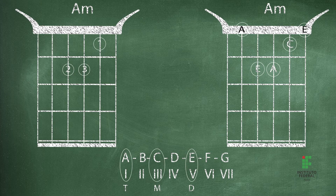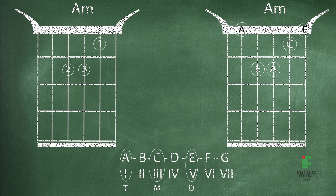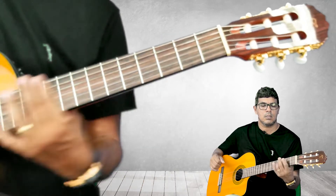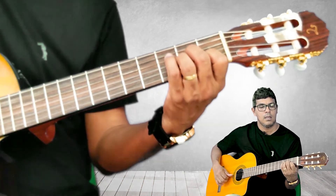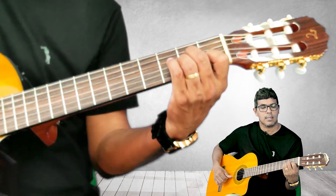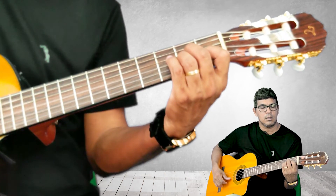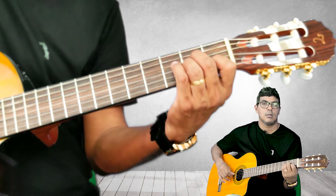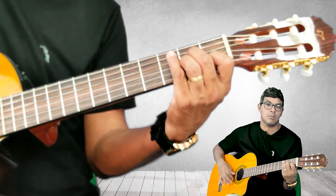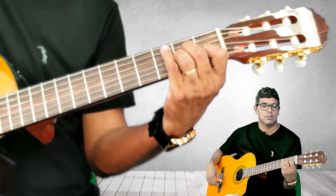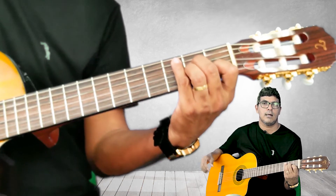Chegando ao próximo exemplo, eu tenho o acorde de Lá menor. Utilizando os graus tônico, mediante e dominante das notas da escala de Dó a partir da nota Lá, eu terei Lá, Dó e Mi. Eu tenho o Lá na quinta corda, o Mi na quarta corda da segunda casa, o Lá na terceira corda da segunda casa, o Dó na primeira casa da segunda corda, e o Mi solto aqui embaixo. É o acorde de Lá menor, também utilizando as notas dos graus mencionados.